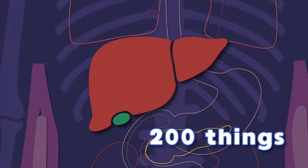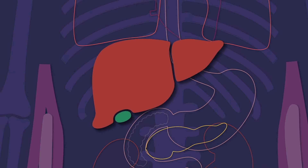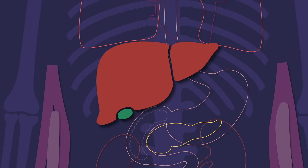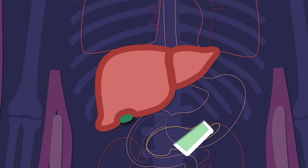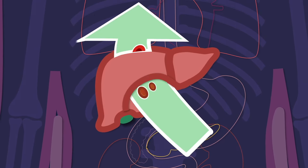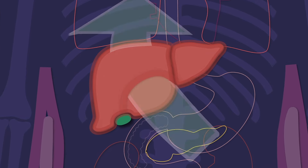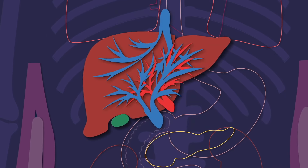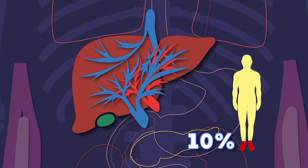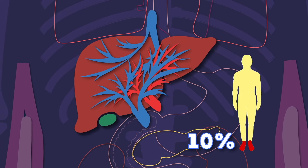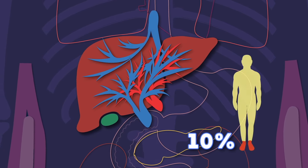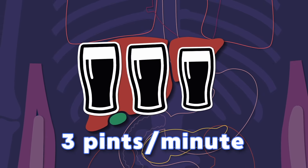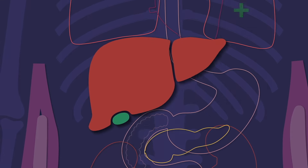Another impressive job the liver has to do: it filters toxins from your blood and shoots them out with pee and poo. The network of blood vessels within the right and left lobes can store 10% of the body's blood and filters it while it flows. Three pints of blood is filtered through your liver every minute — so please treat your body well and put the right food and drink in it.